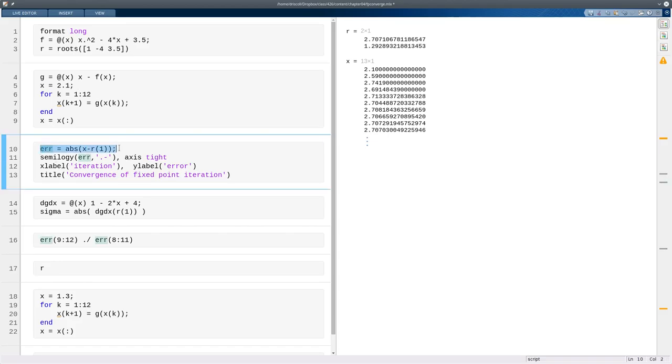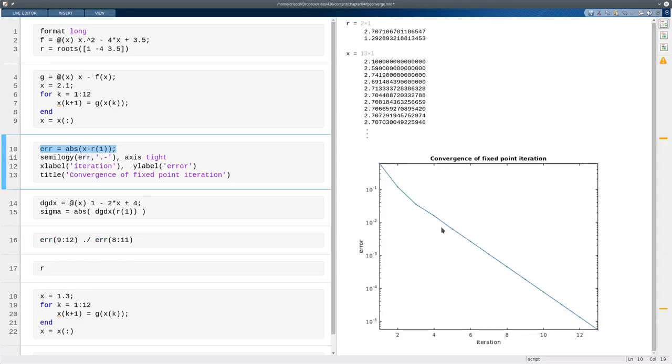And what we see is that it does seem to be converging to the root at 2.7. If I define the error sequence and plot that on a log linear scale, then we see that after the first few iterations it settles into what looks like a perfect straight line.